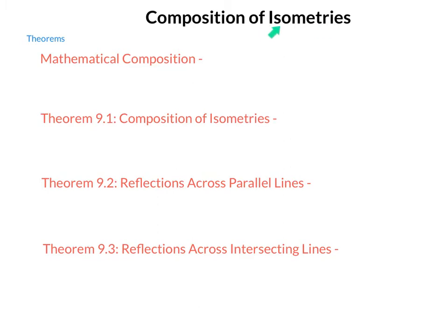Iso means same, and metries are measurements or distances. So any transformation that preserves distance or preserves measurement is an isometry. In our investigation so far, that would include our translations, reflections, and rotations.